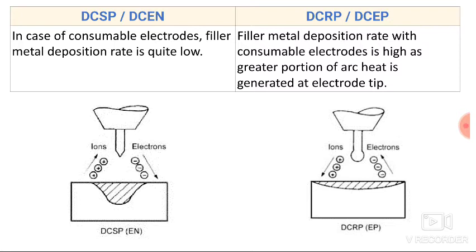In reverse polarity, the filler metal deposition rate with a consumable electrode is high, as the greater portion of the arc heat is generated at the electrode tip. As electrons start moving from the base plate to the electrode, maximum heat is generated at the electrode, making the filler metal deposition rate high in reverse polarity.